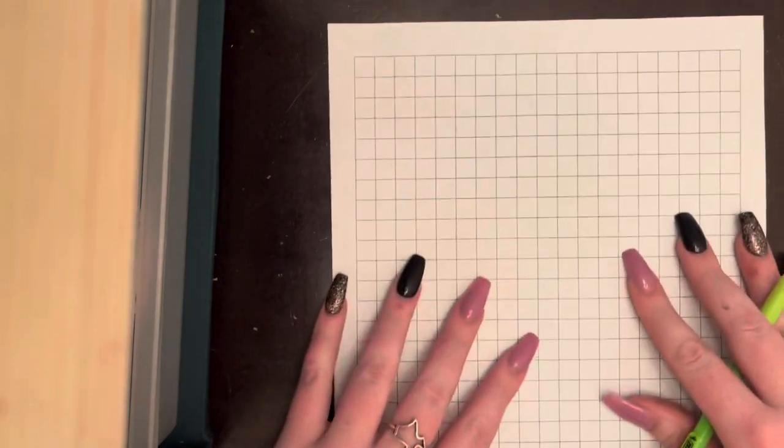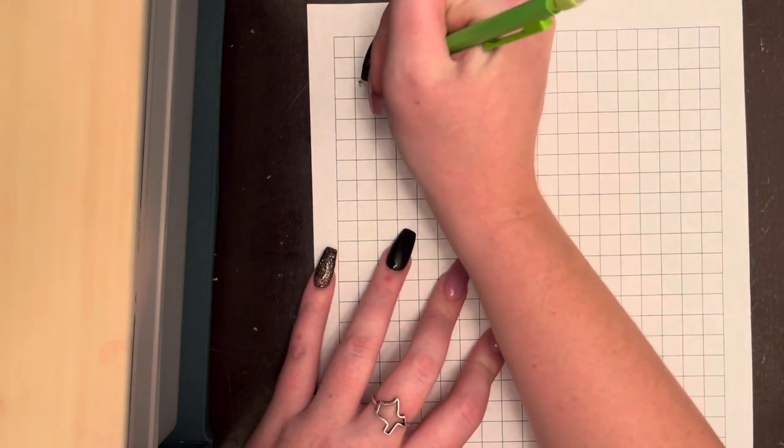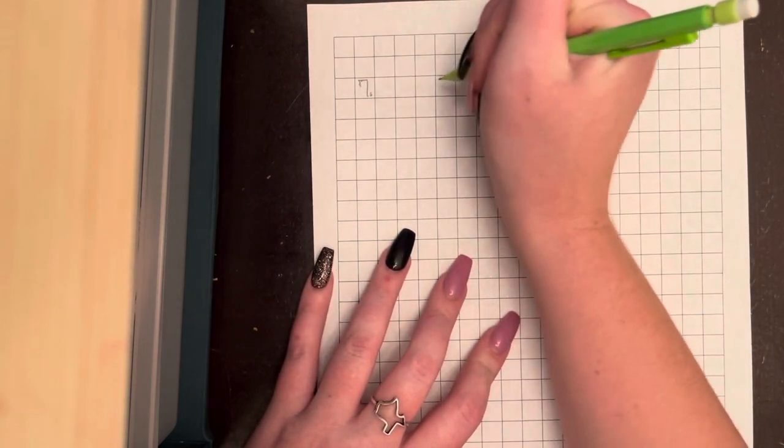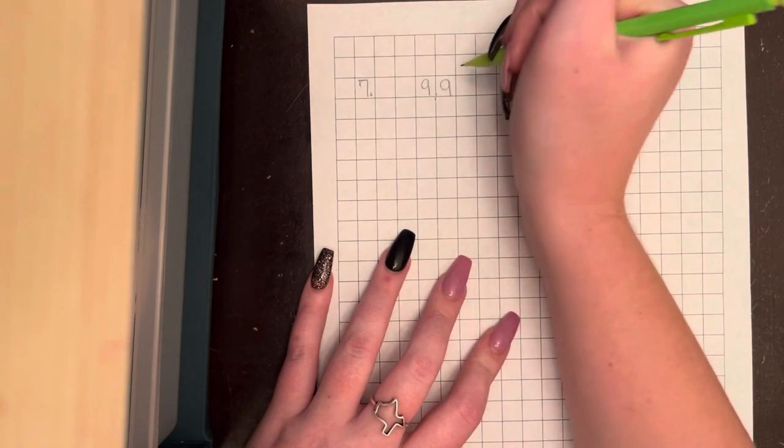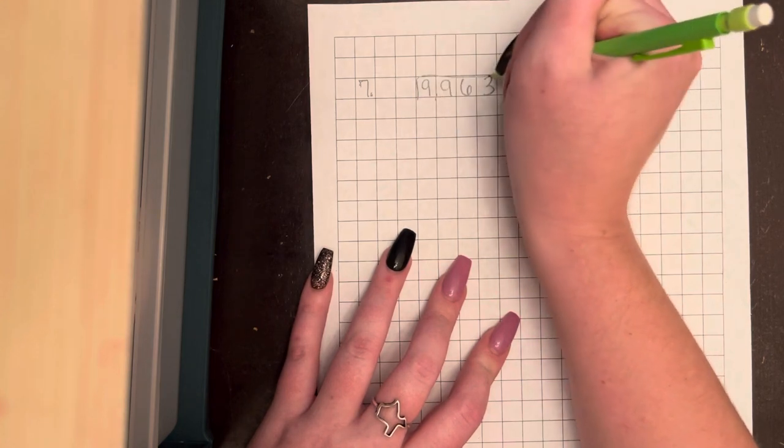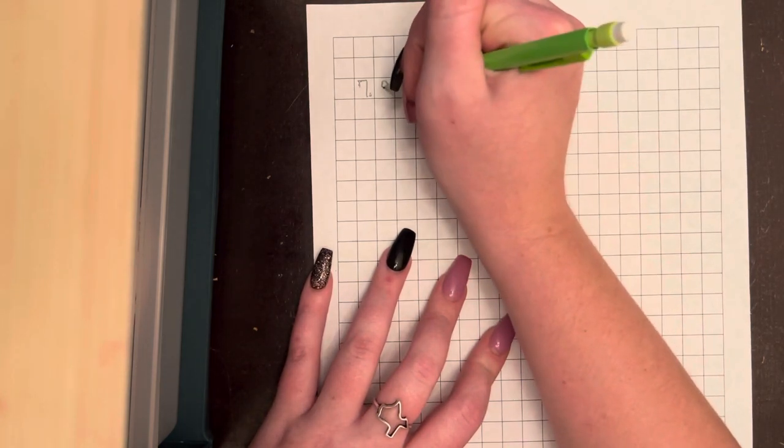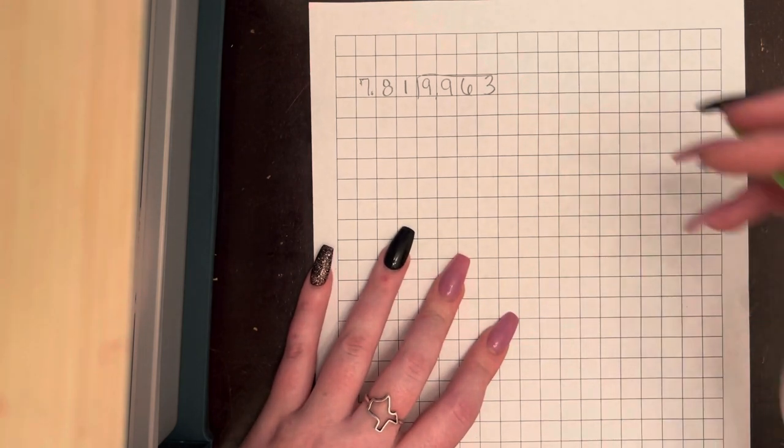So switch to your graph paper. We have on number 7, we have 9,963 divided by 81. Okay, so take a minute and write down the steps.